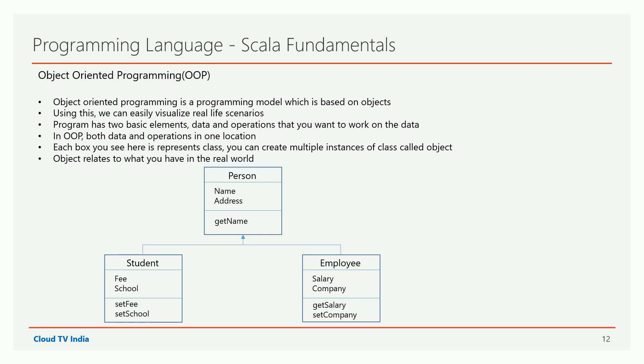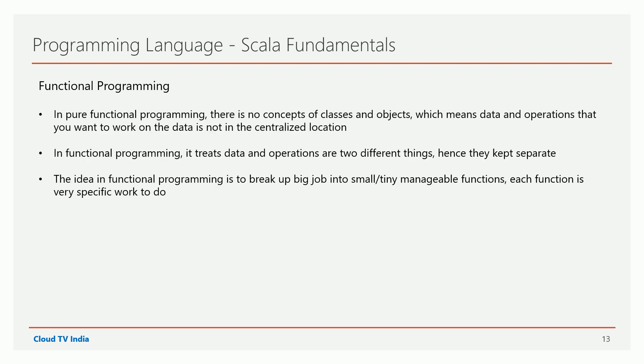Now let's see what functional programming is. In pure functional programming, there is no concept of class and objects, meaning data and operations are not in a centralized location — they are kept separate. The idea in functional programming is to take a big job and break it into small, manageable functions where each function is meant to do specific work. That's how functional programming works.